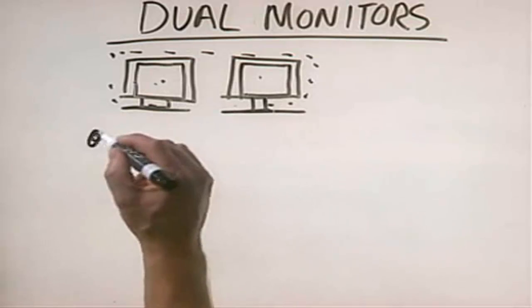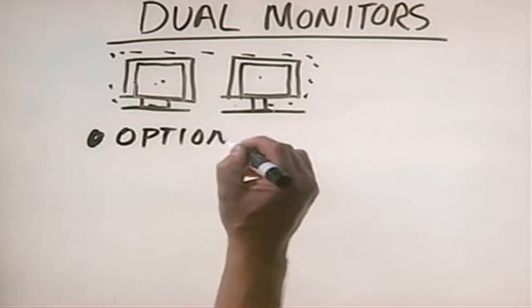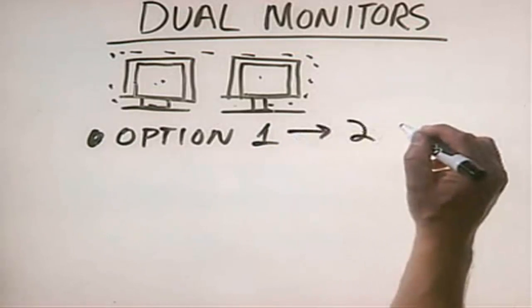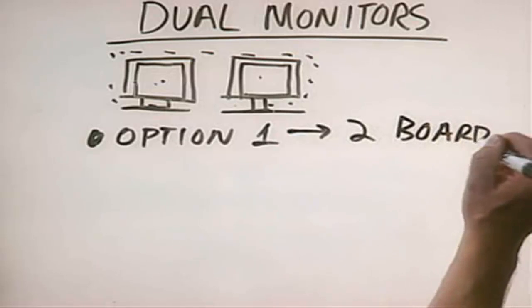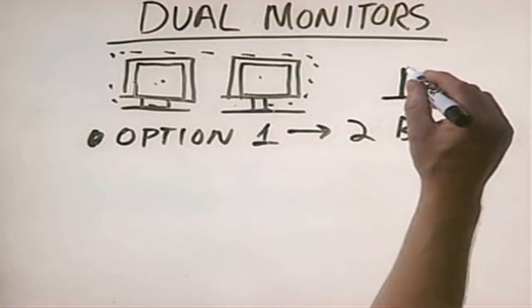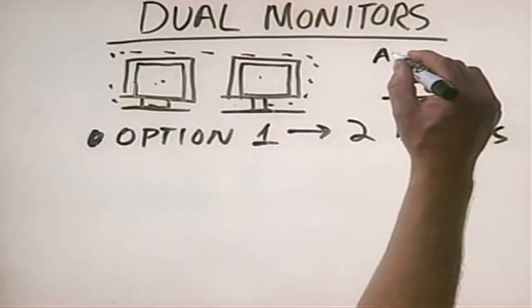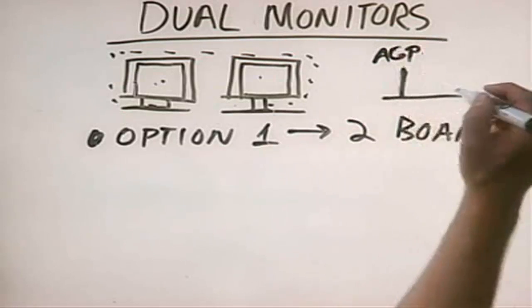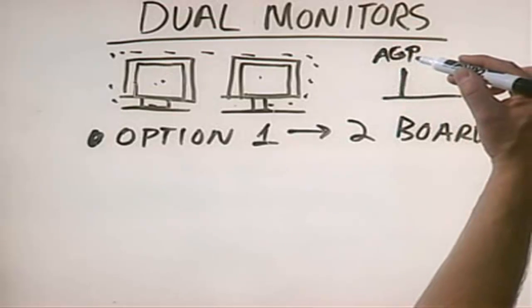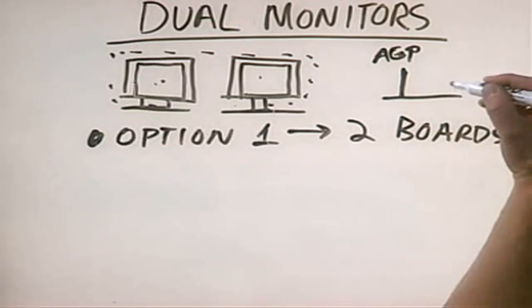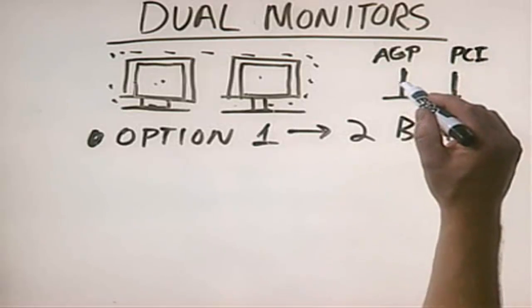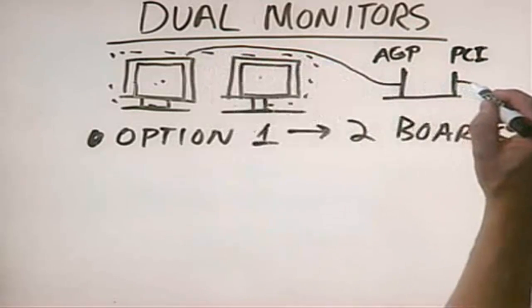Option one is to actually install two video boards in your PC system. The first board has to be an AGP card. The second board, however — remember with AGP we can only have one expansion slot in the bus — has to be a PCI card. You connect one monitor to one of the video interfaces and the other monitor to the second interface.